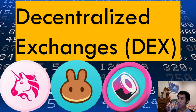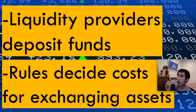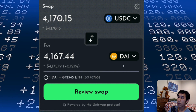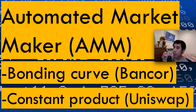Many decentralized exchanges such as Uniswap do not use order books for precisely those reasons. Liquidity providers first deposit their funds into a liquidity pool, and the DEX then has rules for deciding how these assets can be swapped. The mechanisms used by DEXs to enable trading are called automated market makers. These are automated because the logic is all written in smart contracts. Examples include bonding curves, used by Bancor, and constant product, used by Uniswap.